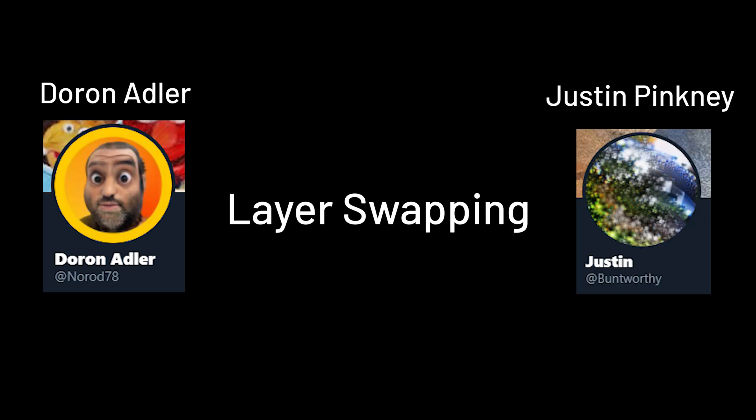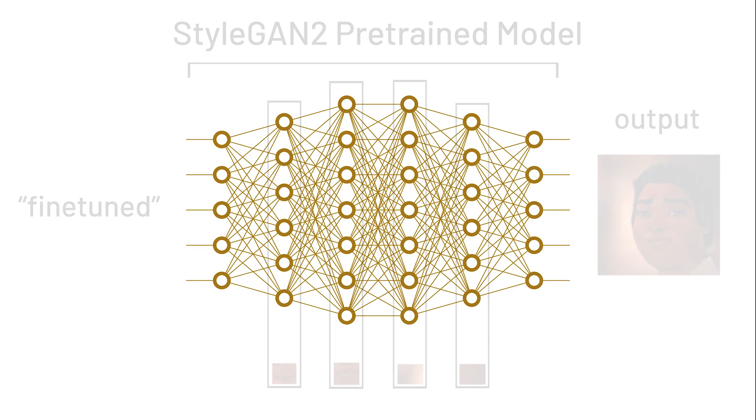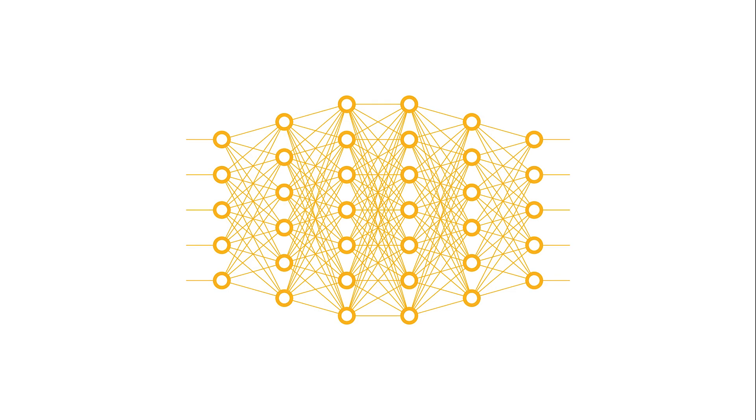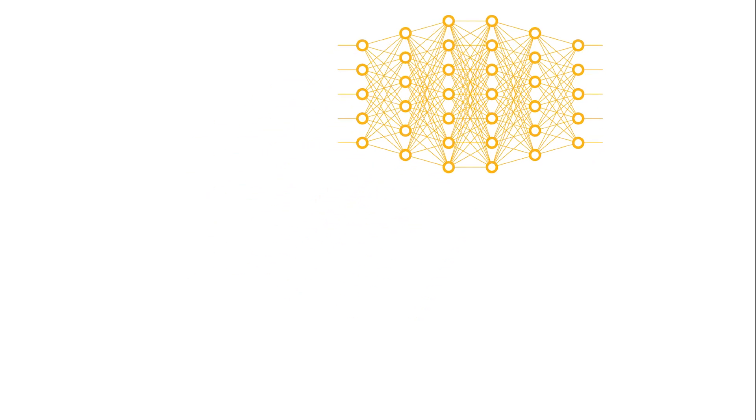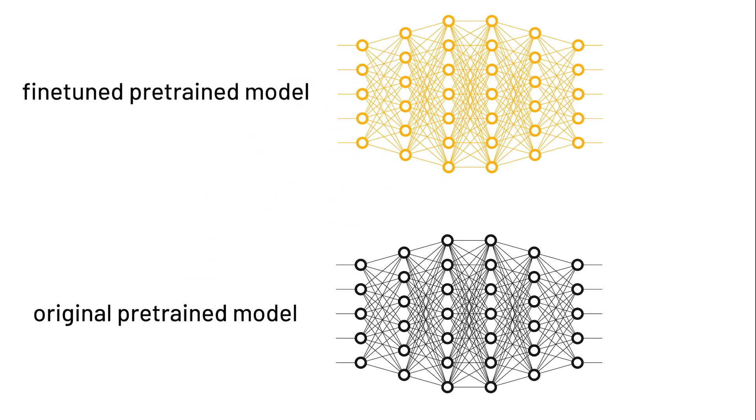So instead, Doron Adler used the idea of layer swapping introduced by Justin Pinckney to actually overcome this problem. What they have basically done is that after training a new cartoon face generating model on top of the old pre-trained model for StyleGAN2,